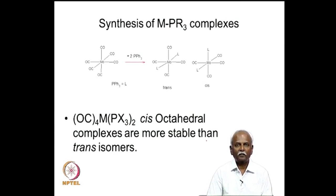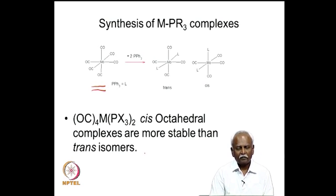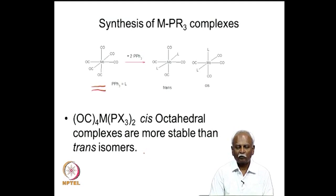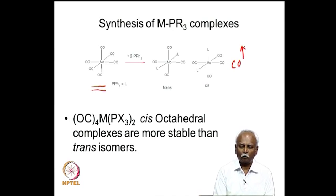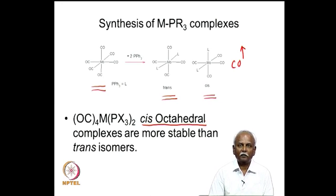Let me give you an example of how one can synthesize triphenylphosphine complexes. Take a molybdenum hexacarbonyl complex and treat it with 2 equivalents of triphenylphosphine. Carbon monoxide will escape into the reaction medium, leaving the complex. You might expect treatment of MoCO6 with 2 equivalents of PPh3 to give a trans complex, but it turns out that exclusively the cis octahedral complex is formed — only the cis complex is isolated from this reaction mixture.